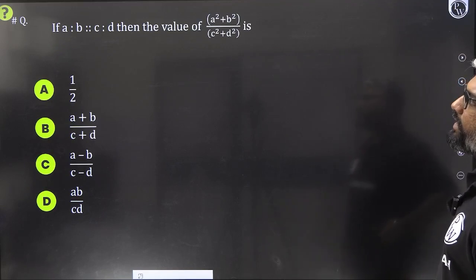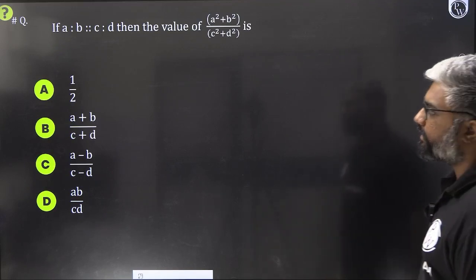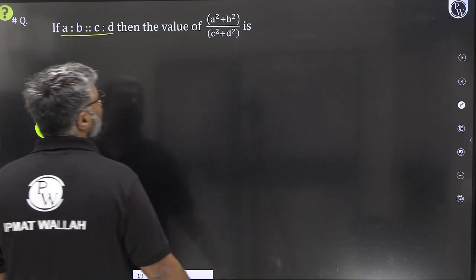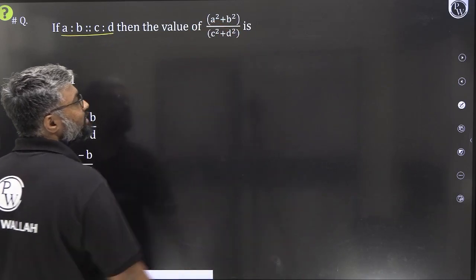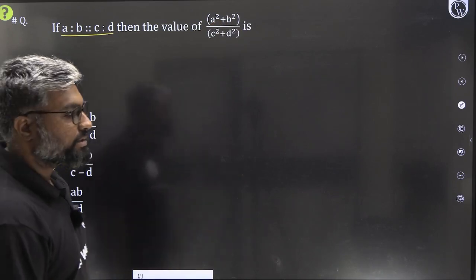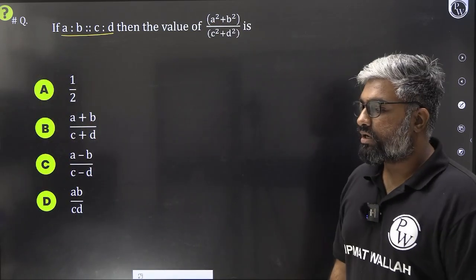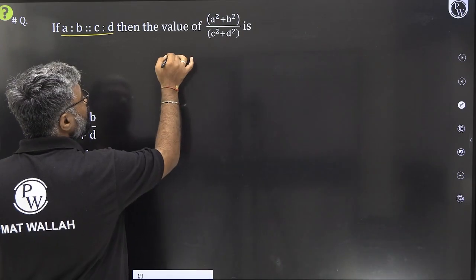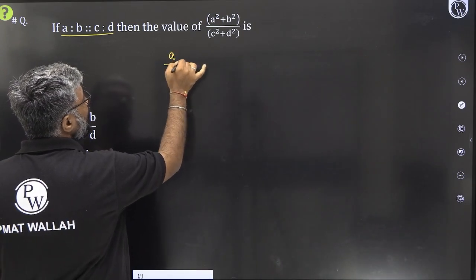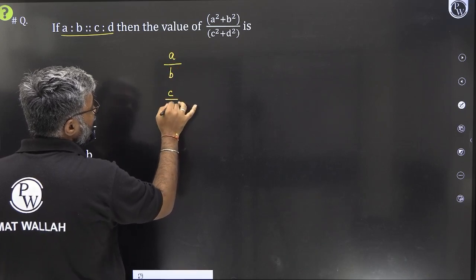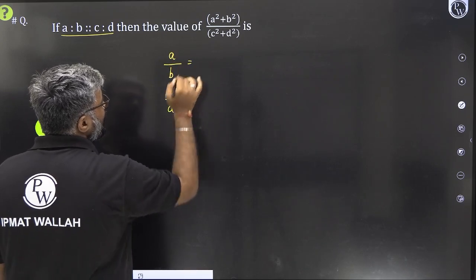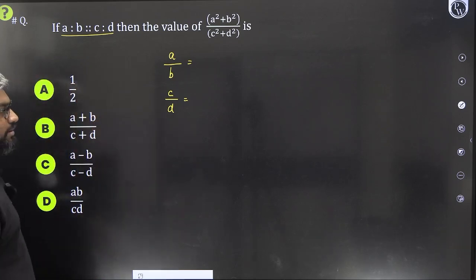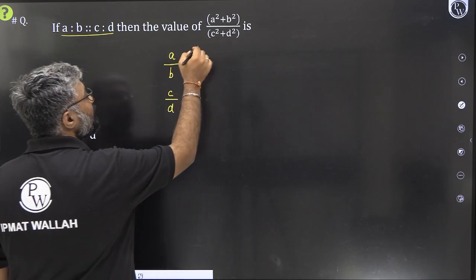Here we have, they are saying if A by B is equal to C by D, right? They are saying A, B and C, D, these two ratios are proportionate. Then what would be the value of A square plus B square by C square plus D square? Multiple ways of looking at it, but one of the most comfortable and convenient way is to substitute values for A and B. So we substitute values for A and B and we substitute values for C and D in such a way that we don't end up having them equal because we could have multiple options that make sense there. We are going to use different numbers.